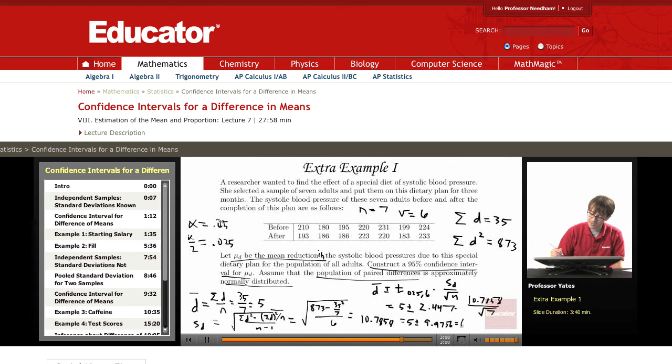So we get a confidence interval. We subtract that from 5 and add it to 5 of negative 4.9756 and 14.9756. So we would say with 95% confidence the difference in systolic blood pressure based on this special diet is between negative 4.9756 and 14.9756.